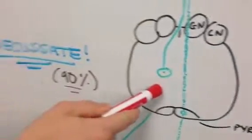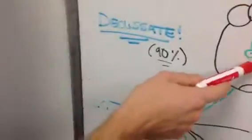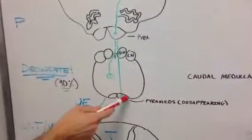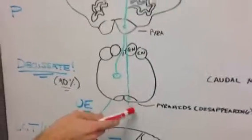So 90% of the fibers are going to decusate, which makes sense because you get a lot of fibers for the limbs compared to the trunk. So the rest of the 10% doesn't decusate and it stays kind of midline.